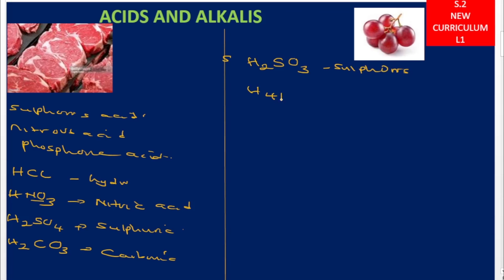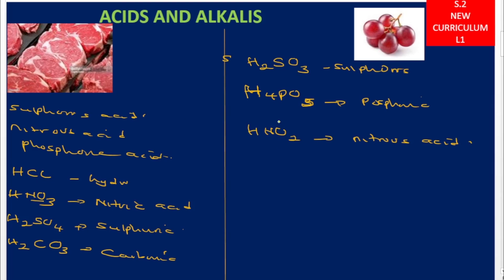We also have H3PO4, which is phosphoric acid. Then we have HNO2, which is nitrous acid. So when we look at all these ones together, we are calling them mineral acids because they are coming from mineral salts.